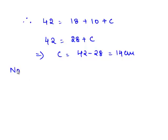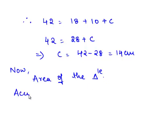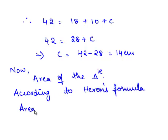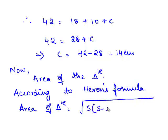Now we need to find the area of the triangle. According to Heron's formula, the area of the triangle is equal to the square root of S times (S minus A) times (S minus B) times (S minus C).